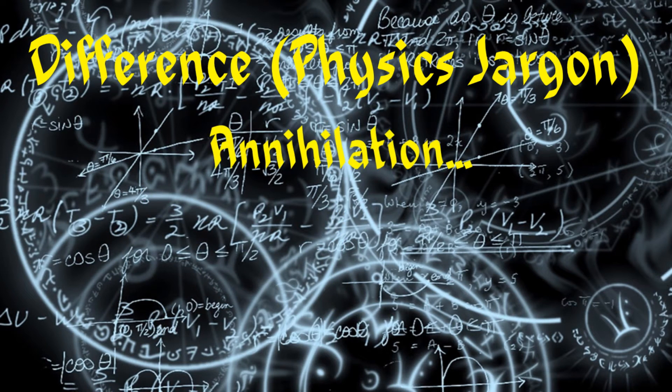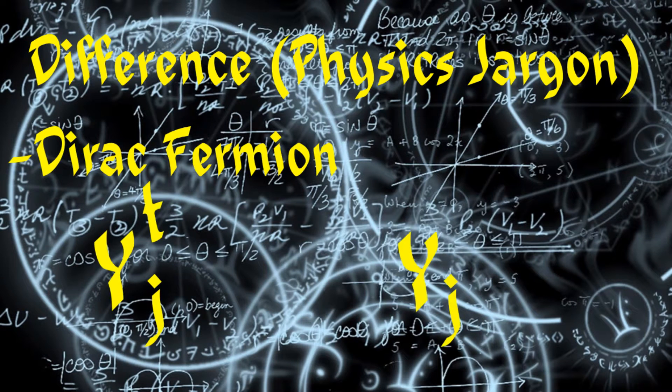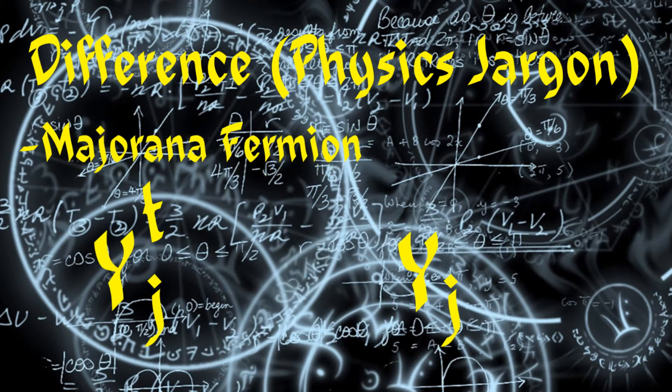Whereas the annihilation operator, yj, annihilates it, or equivalently, creates the corresponding antiparticle. For Dirac fermion, the operators y†j and yj are distinct, whereas for Majorana fermion, they are identical.